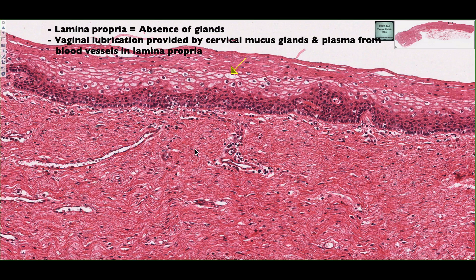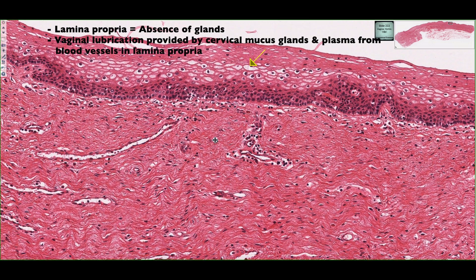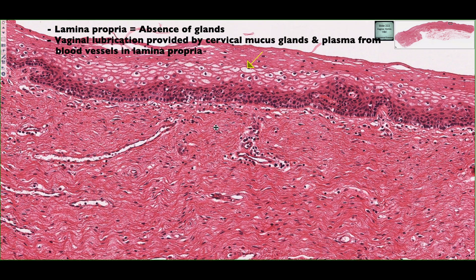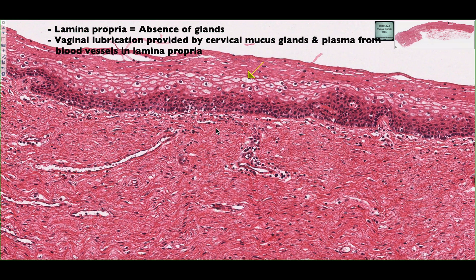In addition, vaginal lubrication can also come from blood plasma or exudate from the blood vessels inside the lamina propria, and it mixes with the cervical secretions as it passes through this epithelial lining.